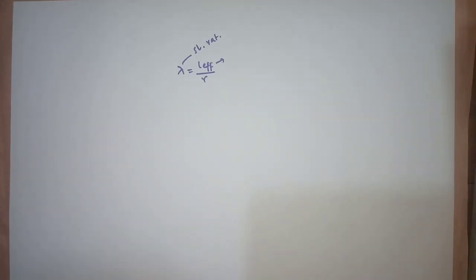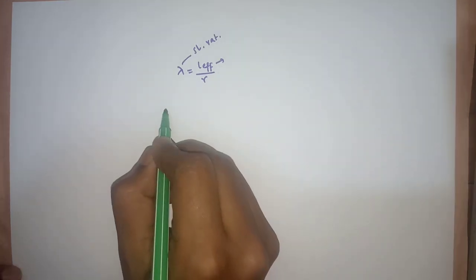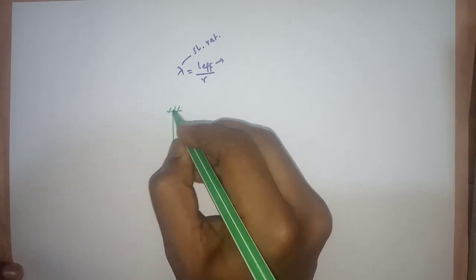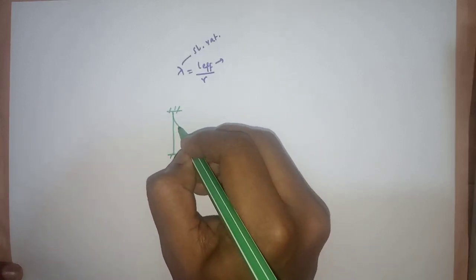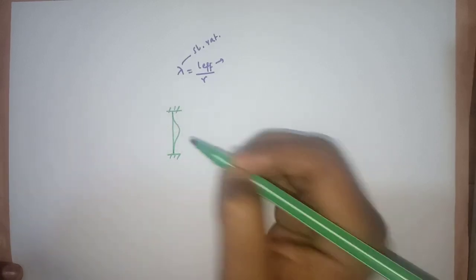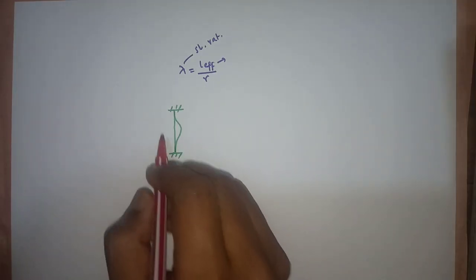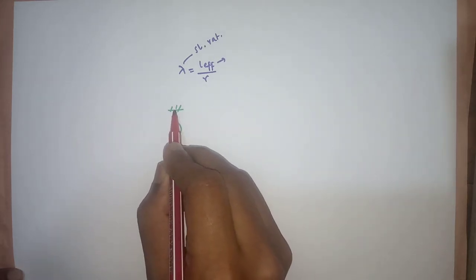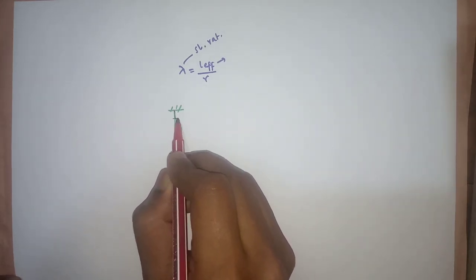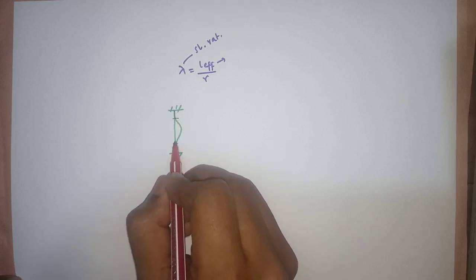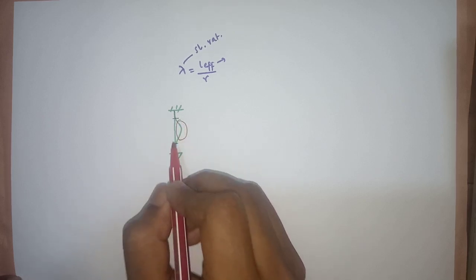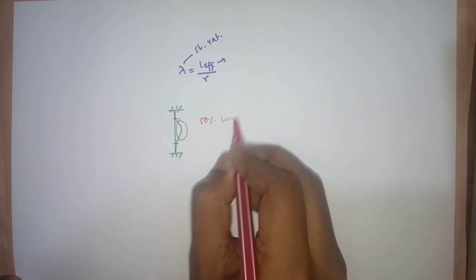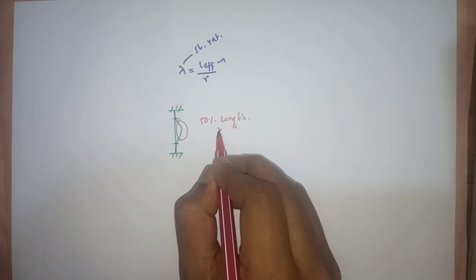If we draw a column with both ends fixed, we will see the buckled zone of the column is not the full length of the column — it is something less, set back from the column supports. The zone between both supports is the buckled zone, and this is 50 percent of the column length, which we denote with the k value.